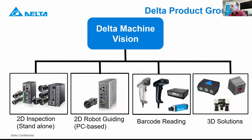The next step is our Delta machine vision groups and possibilities. From the past, from the last years, you know already the 2D inspection standalone units. But what we have also launched this year is the 2D robot guiding PC software, the VGR software. We have also some possibilities for barcode reading: handheld, fixed mounted, but also a vision sensor. And the third one we are starting to promote now is a 3D solution — the all-in-one and the TOF camera, for example.